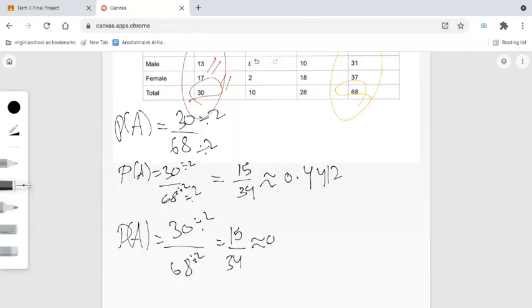So approximately 0.4412 equals 44.12 percent.